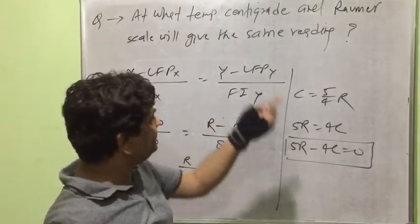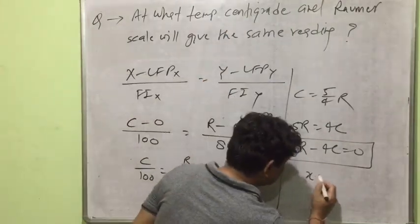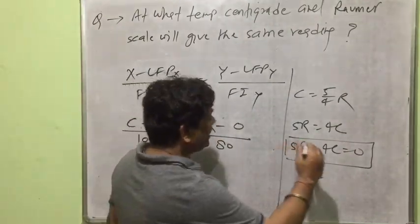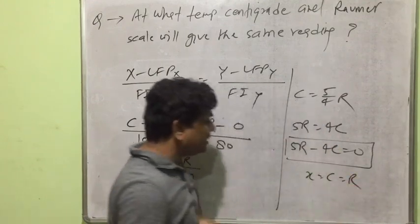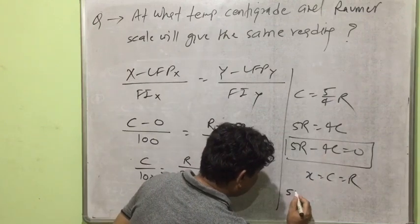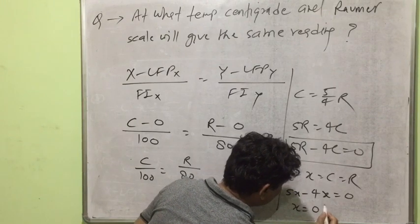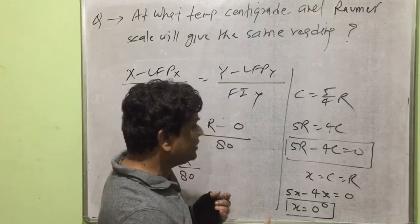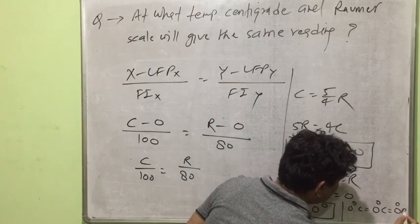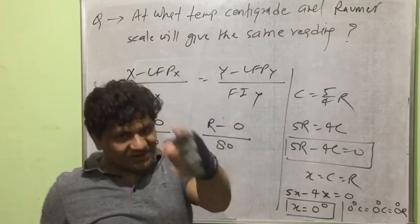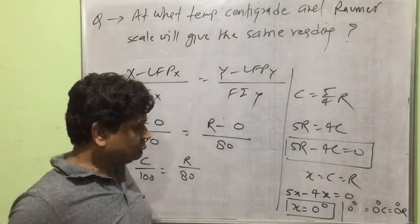Using the relation 5R − 4C = 0, suppose x is the temperature at which both centigrade and Réaumur scales give the same reading, so C = R = x. Substituting: 5x − 4x = 0, giving x = 0°. Therefore, 0°C = 0° Réaumur — these two scales give the same reading at 0 degrees.